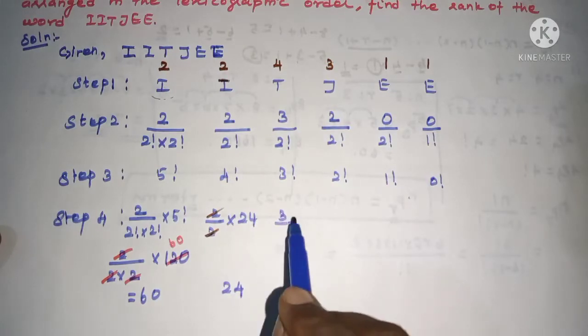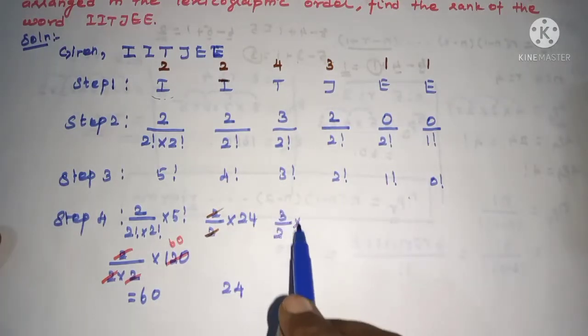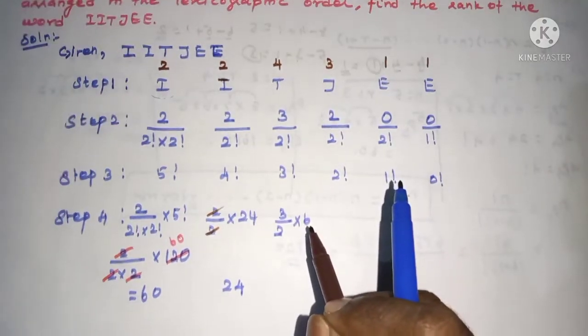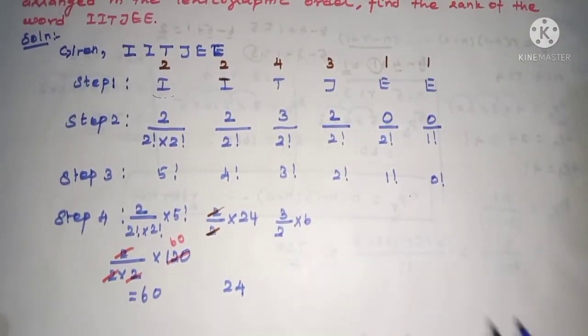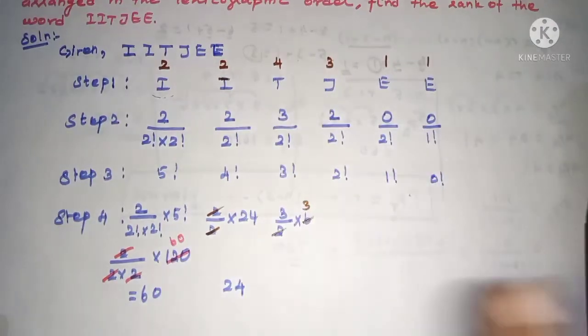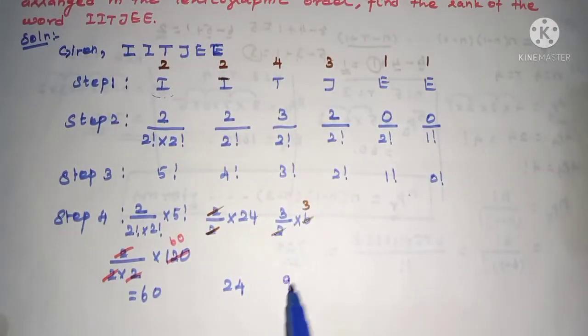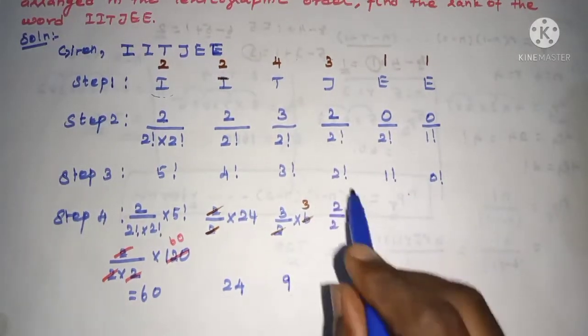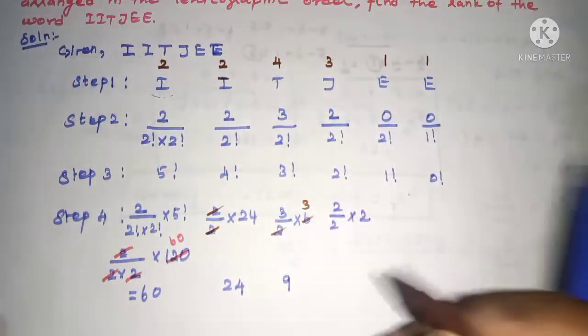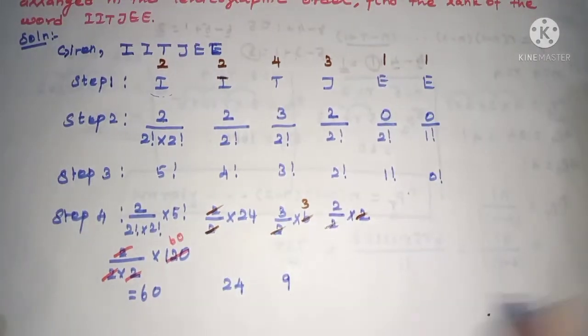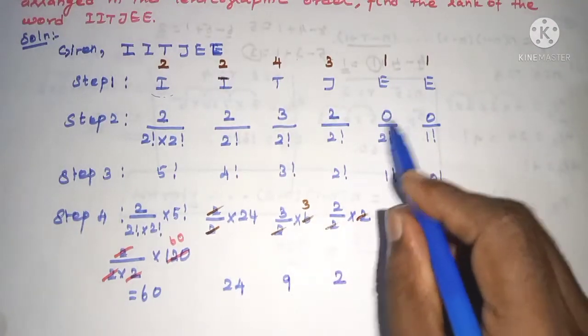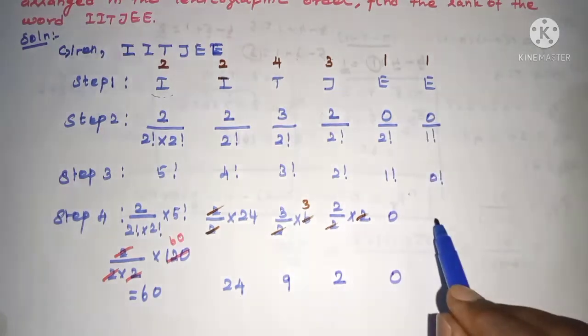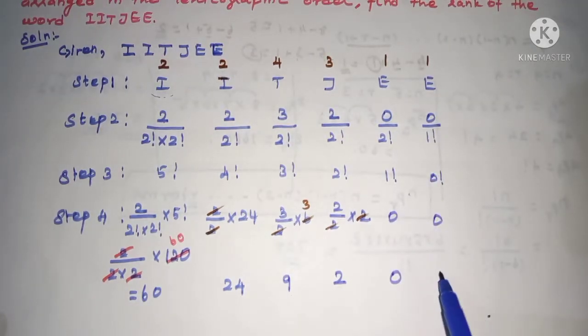So total this value is 60. 2 divided by 2 factorial, 2 into 6, cancel, we get 24. 3 divided by 2 factorial is 2 into 3 factorial, which is 9. 2 divided by 2 factorial is 2, we get 2. 0 divided by anything we get 0, so entire value 0 also. Like in the two terms 0.